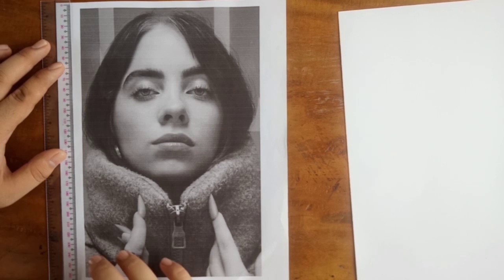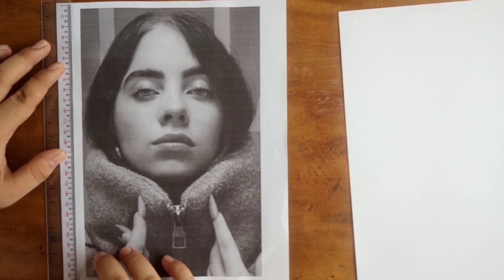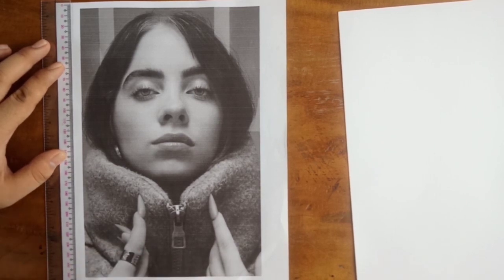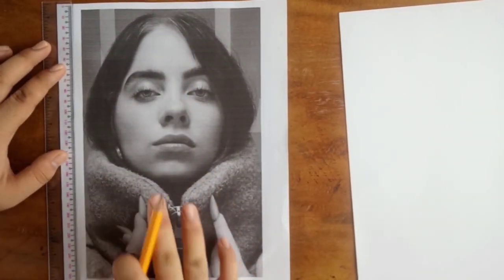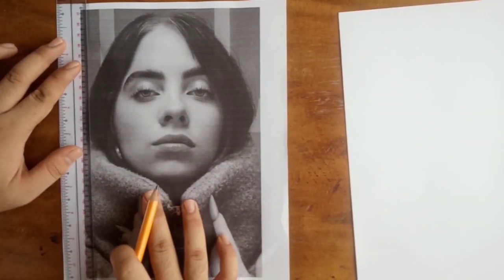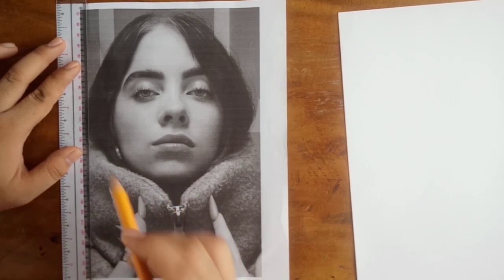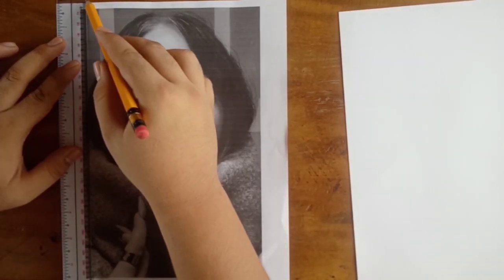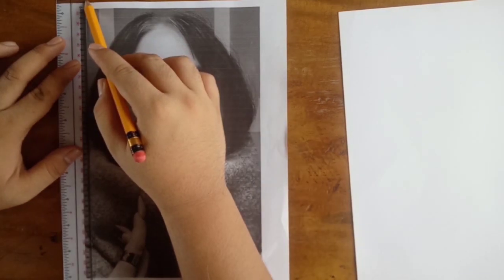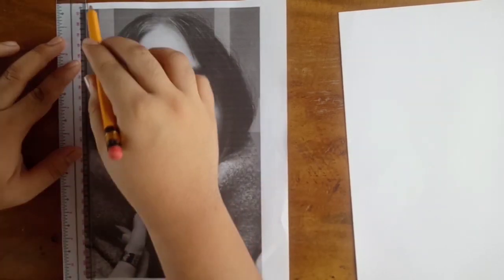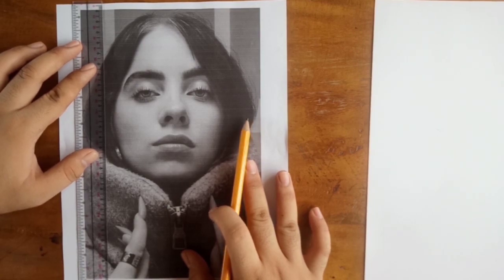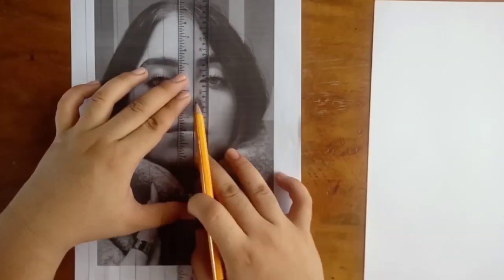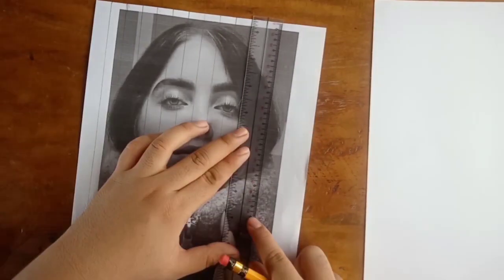Gagawin na tayo ng grid. Yung size nang ginamit ko is half inch lang, para hindi mahirap. Kasi sa paggawa ng grid, dapat maliliit lang yung sizes ng squares, para hindi mahirap kopyahin yung reference natin. Dapat rin i-assure natin na straight line yung pangkakagawa ng grid natin, para hindi tayo magkaroon ng problema if mag-i-sketch na tayo. Kasi, dun ako nang-struggle eh.